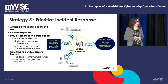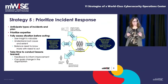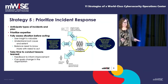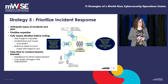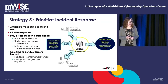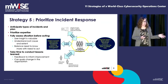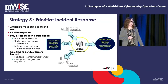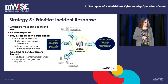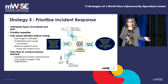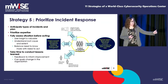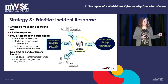Now shifting to strategy five — prioritizing incident response. If you do nothing else well, do incident response well. That's where you should start. Once you can do incident response, you can do a lot of the other functions that augment your environment and make things more sophisticated. But responding to incidents is a hard thing to do well. What we suggest is that you anticipate the types of incidents you're going to have, plan for them, and prioritize them.